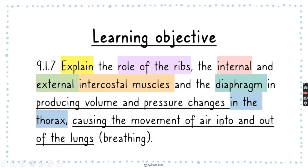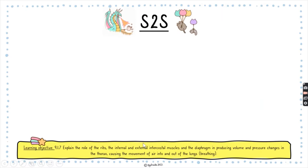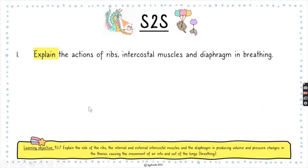Our learning objective today is 9.1.7: to explain the role of the ribs, the internal and external intercostal muscles, and the diaphragm in producing volume and pressure changes in the thorax, causing the movement of air in and out of the lungs — also known as breathing.